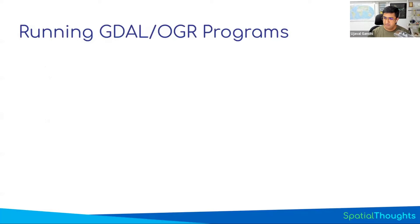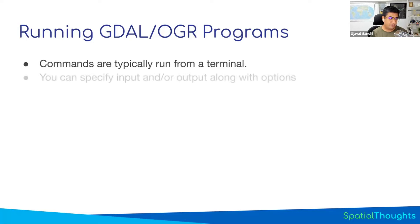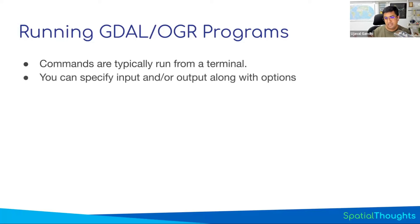How do we run these commands? There are many different ways. The most common is through a terminal — you open a terminal, type the command with a bunch of options, specify the input and output, run it, and it generates the output. That's the typical pattern: command name, input, output, and options.